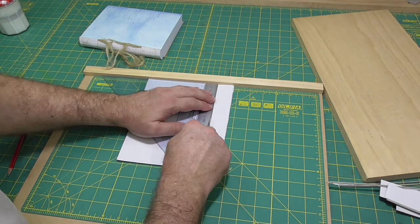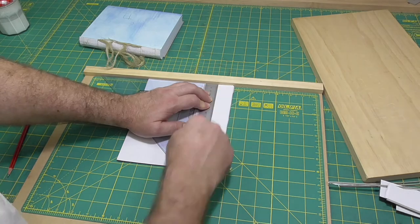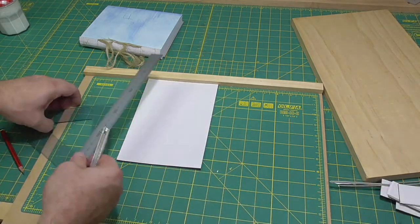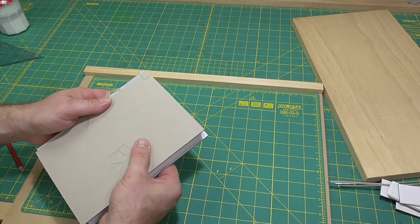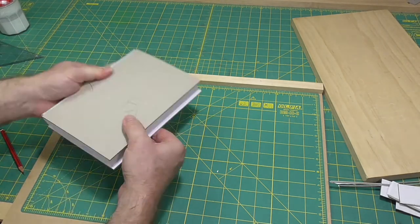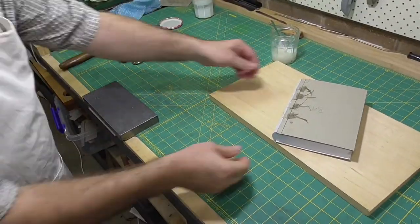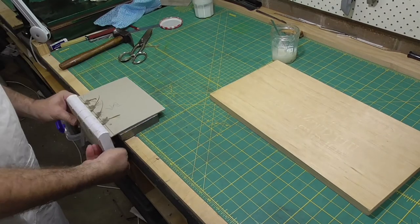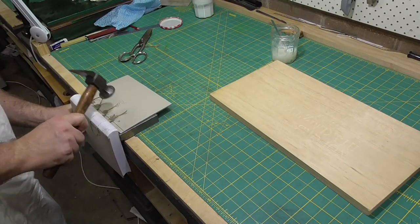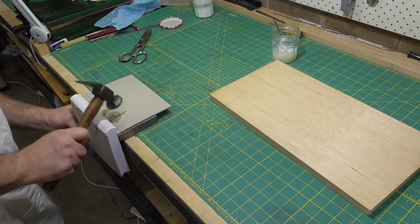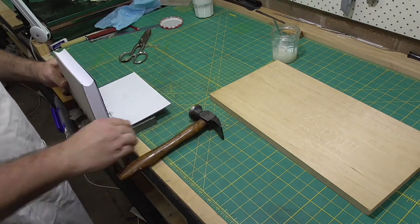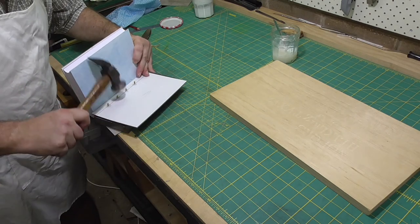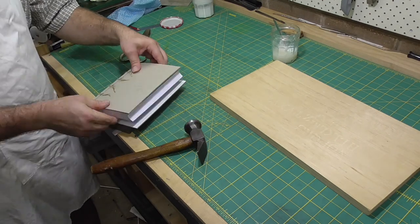That's this week done. And next week, in the final video on the forwarding, we'll do the end bands, we'll line the spine with a hollow tube and then lace on the boards and any other final preparations before covering in leather. So I hope you've enjoyed this video. And if you have, please hit the big thumbs up button. And if you want to be notified of my future videos, such as finishing the forwarding of this book, then hit the subscribe button. Take care. And until next time, cheerio.